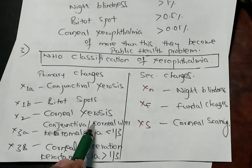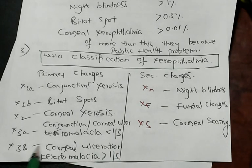X3a means if there is any corneal ulcer, keratomalacia, but less than 1 by 3. If it is X3b, the keratomalacia is more than 1 by 3.